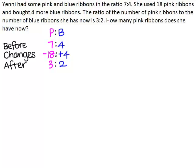To solve a ratio question where all the elements change, we will have to multiply the numbers in the last row — the row after — such that they will be the same. Here we have 3 and here we have 2. The lowest common multiple of 3 and 2 is 6.